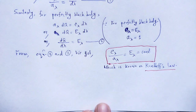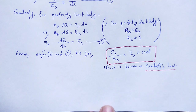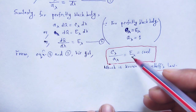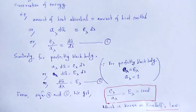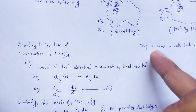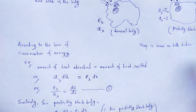Capital E_lambda is the emissive power of a perfectly black body at the same temperature and corresponding to the same wavelength lambda, as we have taken these two bodies to be at the same temperature.